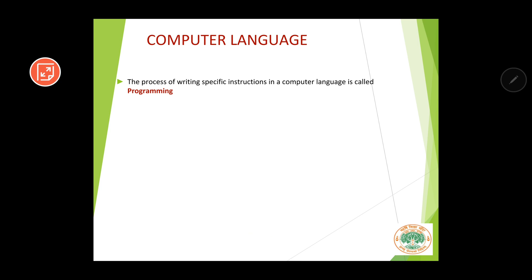Now let's go to the concept of programming. Suppose you are writing some programs in the computer — then what you are doing is called programming. The process of writing specific instructions in a computer language is called programming. If your job is to do programming, then you are known as a programmer. The people who do programming are known as programmers.